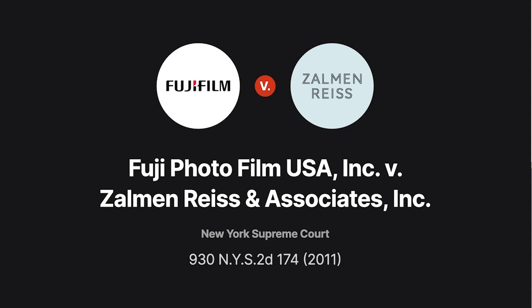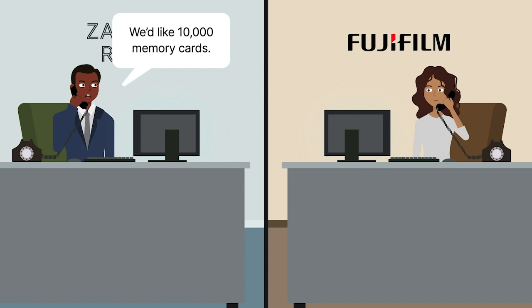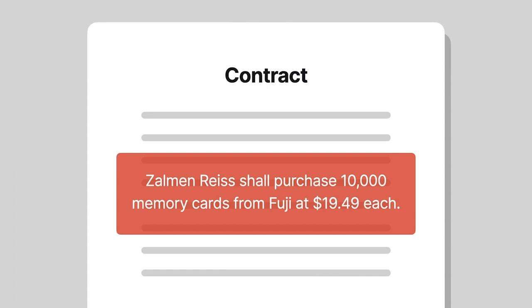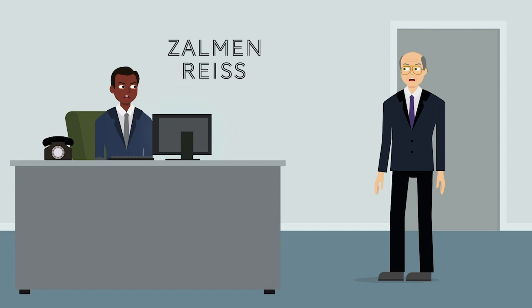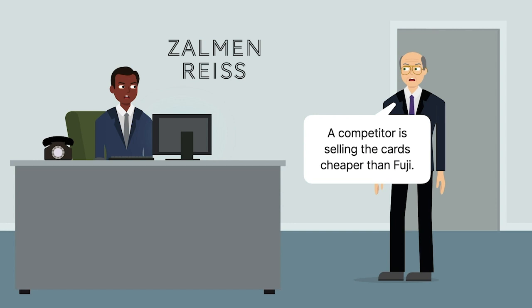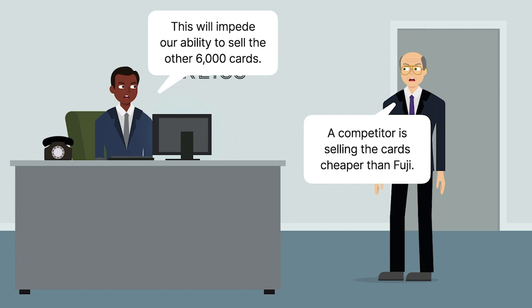In Fuji PhotoFilm vs. Zalman Rees & Associates, Zalman Rees, a wholesale electronics distributor, ordered 10,000 photo memory cards from Fuji PhotoFilm for use in digital cameras. The contract price for the cards was $19.49 each. After having sold approximately 4,000 cards, Zalman learned that a Fuji competitor was selling the cards for a lower wholesale price than Fuji. Consequently, Zalman could no longer sell the remaining 6,000 cards at a profit.